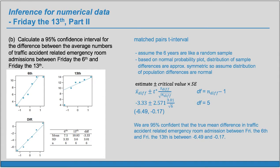Now we are 95% confident that the true mean difference in traffic accident related emergency room admissions between Friday the 6th and Friday the 13th is between negative 6.49 and negative 0.17. Because the entire interval is negative, we have to remind ourselves which order we did the difference in. Here we did the difference as 6th minus 13th. Since the entire interval is negative, we have evidence that this second one is bigger, so we have evidence that there are more on Friday the 13th than on Friday the 6th. If the entire interval had been positive, we would have had evidence that there were more on the 6th. If the interval contained 0, we wouldn't have had evidence of either.